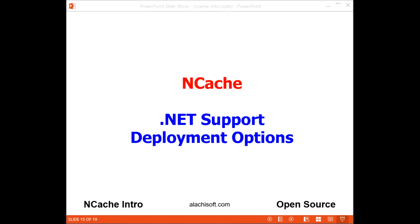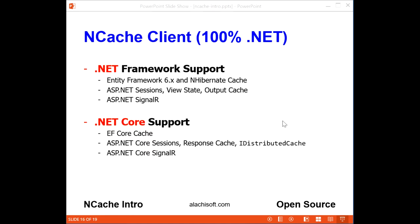NCache is a 100% native .NET solution. NCache provides a cache client with full support for both .NET and .NET Core, with things like Entity Framework, Hibernate, EF Core, ASP.NET, ASP.NET Core, and SignalR.